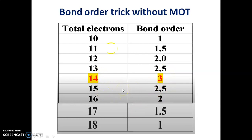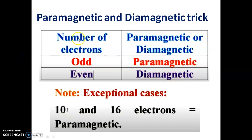So the key trick is: if a species contains 14 electrons, the bond order is 3. For paramagnetic vs diamagnetic: if the species contains an odd number of electrons, it is paramagnetic; an even number of electrons means it is diamagnetic.